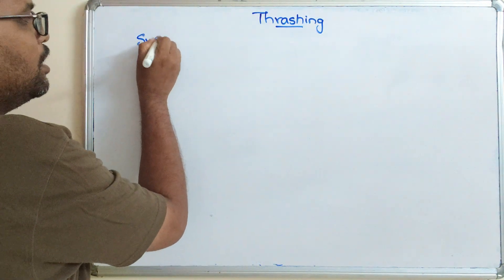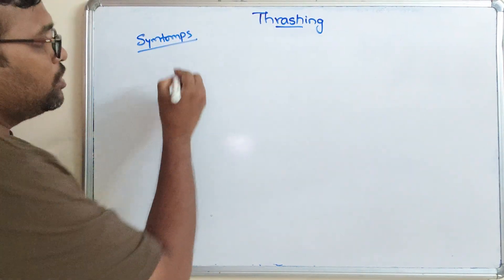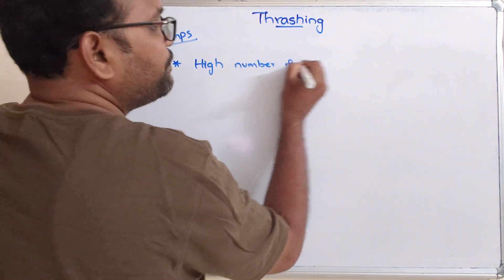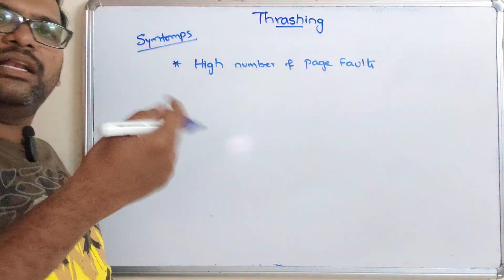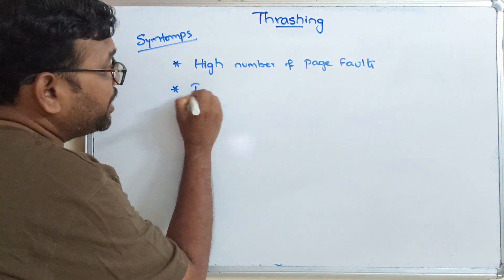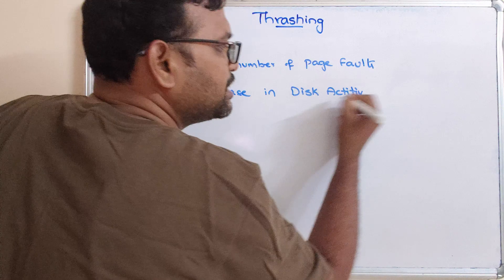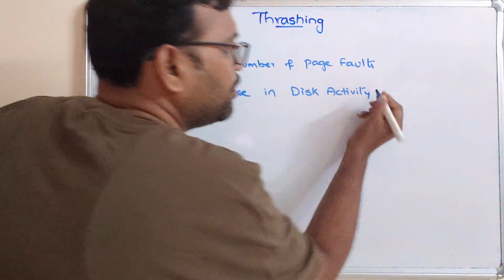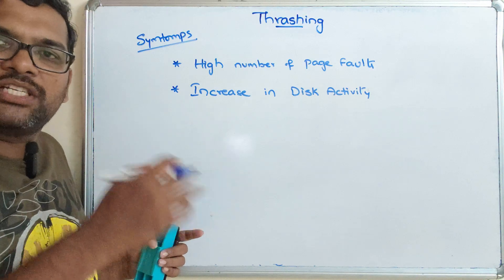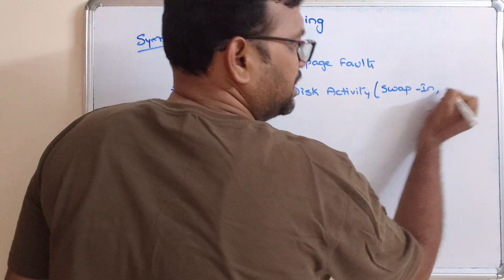How can we know thrashing is occurring? The symptoms of thrashing are: first, a high number of page faults — if there are more page faults, that indicates thrashing. Second, increased disk activity, which means increased swap in and swap out operations. This is essentially increased paging activity.